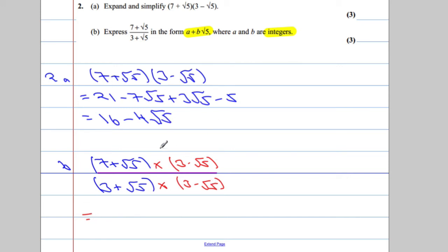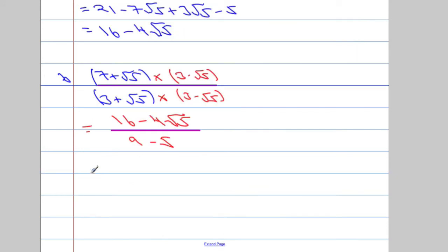The top is going to simplify to 16 minus 4 root 5, and the denominator, well, it's just like the difference of two squares. If I expand and simplify this, we're going to end up with 9 minus 5, and when we tidy that up, 16 minus 4 root 5 is going to be over 4.